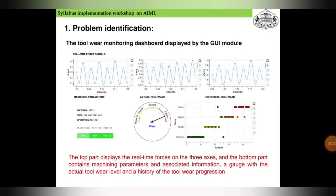Now coming back to the problem identification, the new example is the tool wear monitoring system. The tool wear monitoring dashboard displayed by the graphic user interface module. As mechanical engineers, we already know that as the tool gets drilled into an object with the help of the drilling machine, it starts wearing and it also dulls. So tool wear is a normal process while we process the drilling operation for tools.